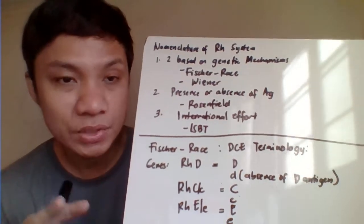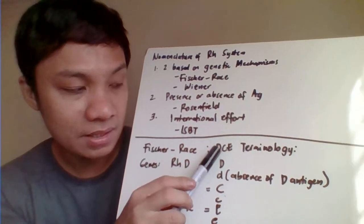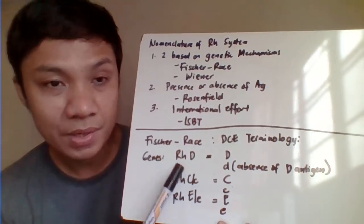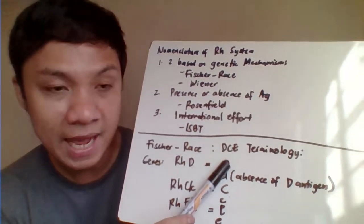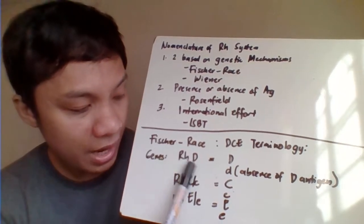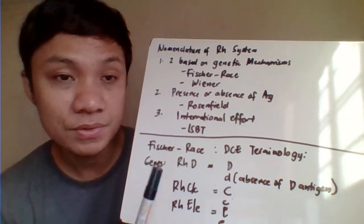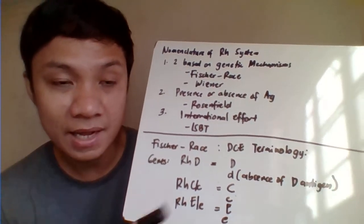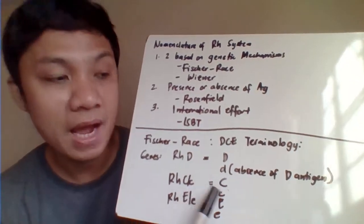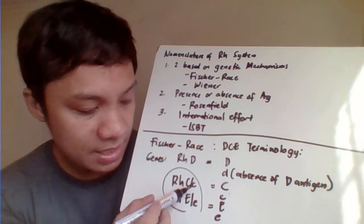The RHD gene, written in italics, codes for production of the D antigen. If you don't have the RHD gene, you cannot produce the D antigen. If the D antigen is absent, it's indicated as a small letter 'd'. The RHCE gene — the big C codes for the big C antigen, small c codes for small c antigen, big E codes for big E antigen, and small e codes for small e antigen. According to Fisher & Race, you need to inherit both the RHD gene and the RHCE gene to have your RH antigens.